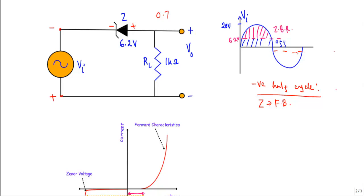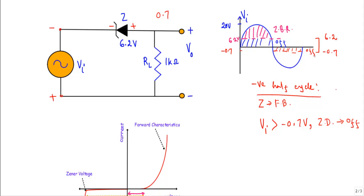As long as the input voltage Vi is greater than -0.7V, the Zener diode will not be in forward bias and will not conduct any current — it will be in the off state. So from -0.7V to +6.2V will be the off state for the Zener diode. If the applied voltage Vi becomes less than -0.7V, the Zener diode will be in forward bias.